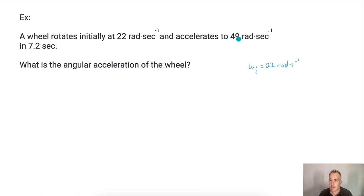All right, and it accelerates to this amount, so 49 radians per second. Does that make sense? This must be my final angular velocity, so that must be 49 radians per second. All right, let's take a look at what else then. Oh, and the time is 7.2 seconds. So I know that t equals 7.2 seconds.